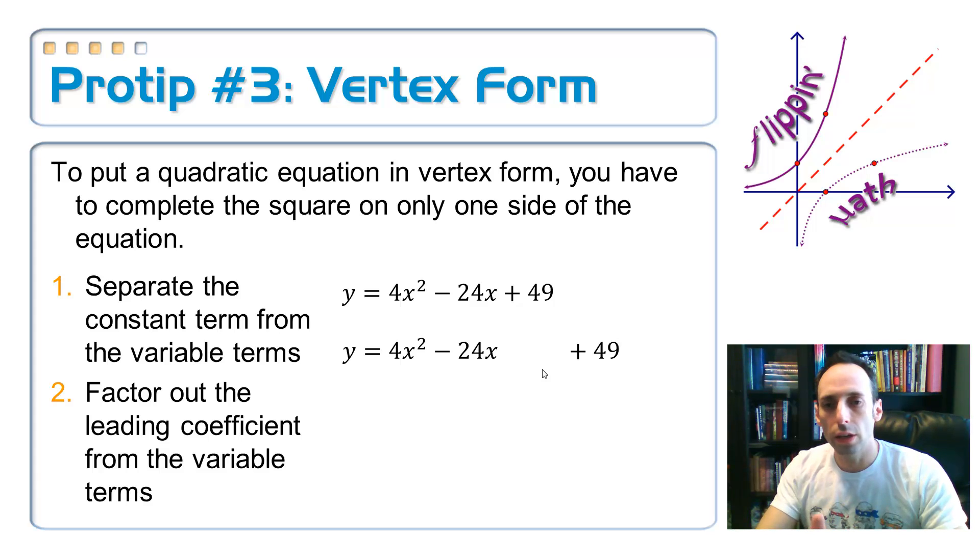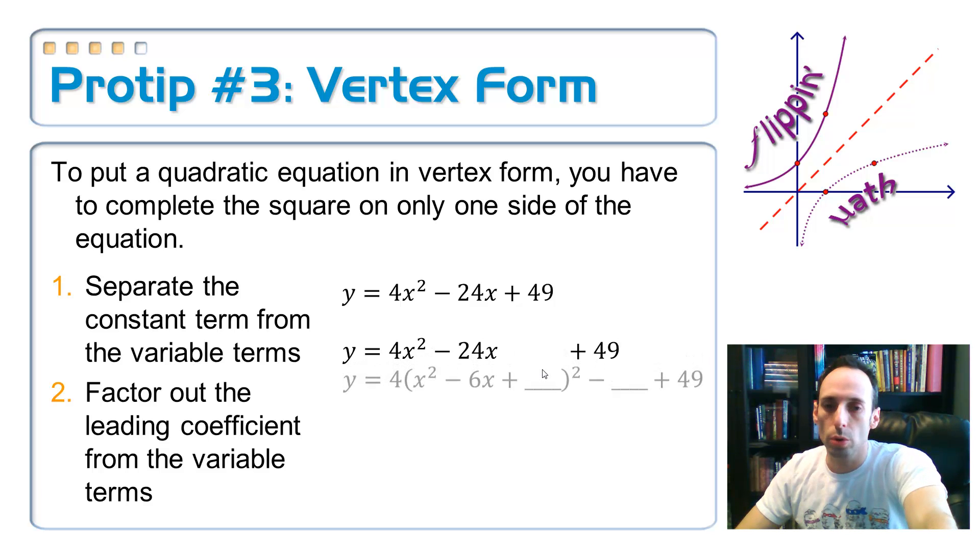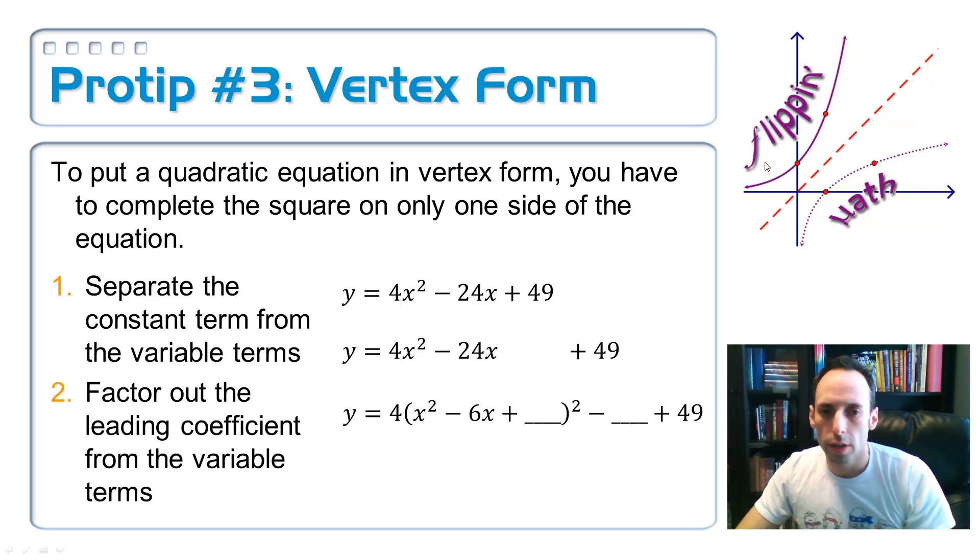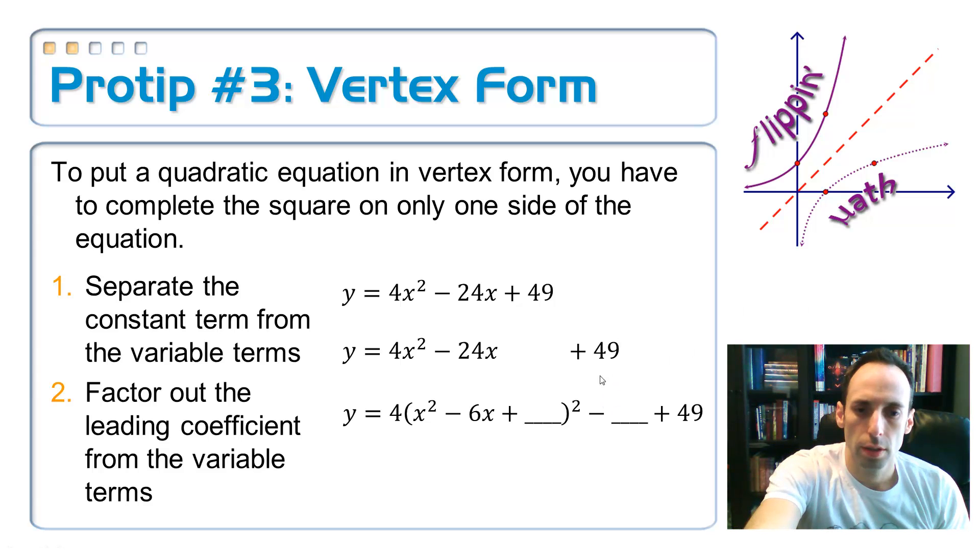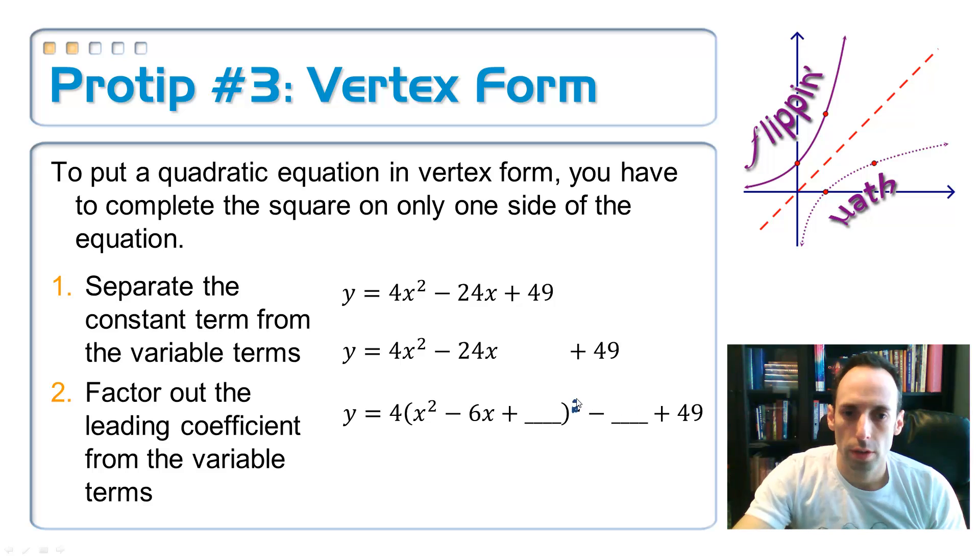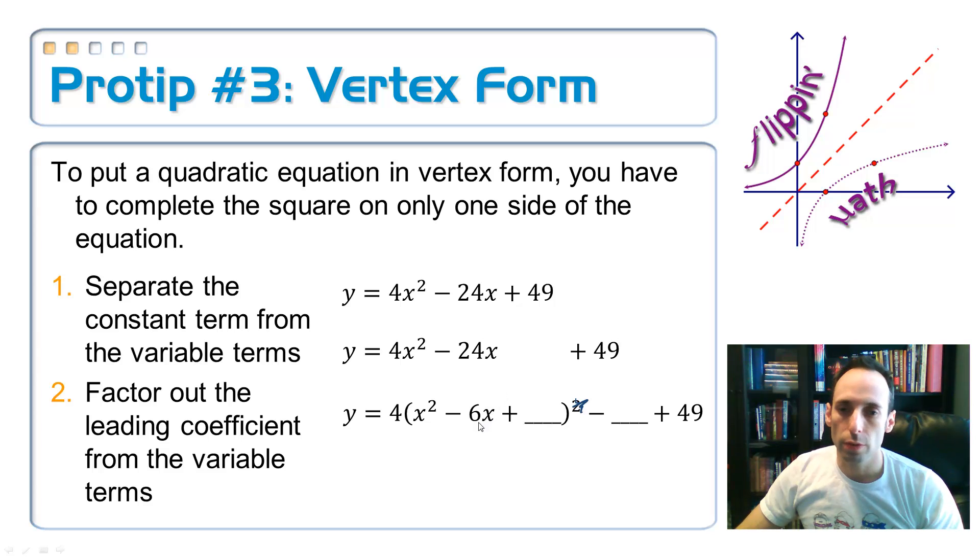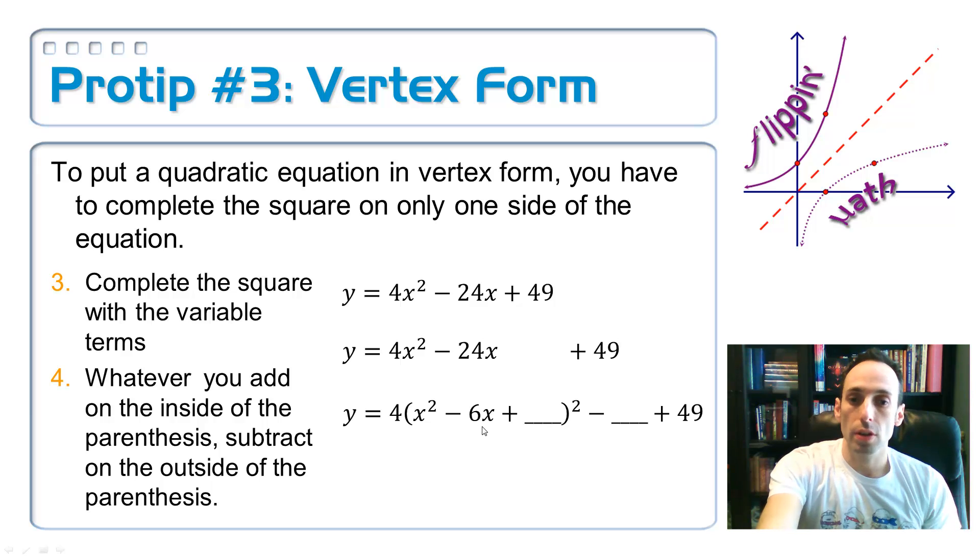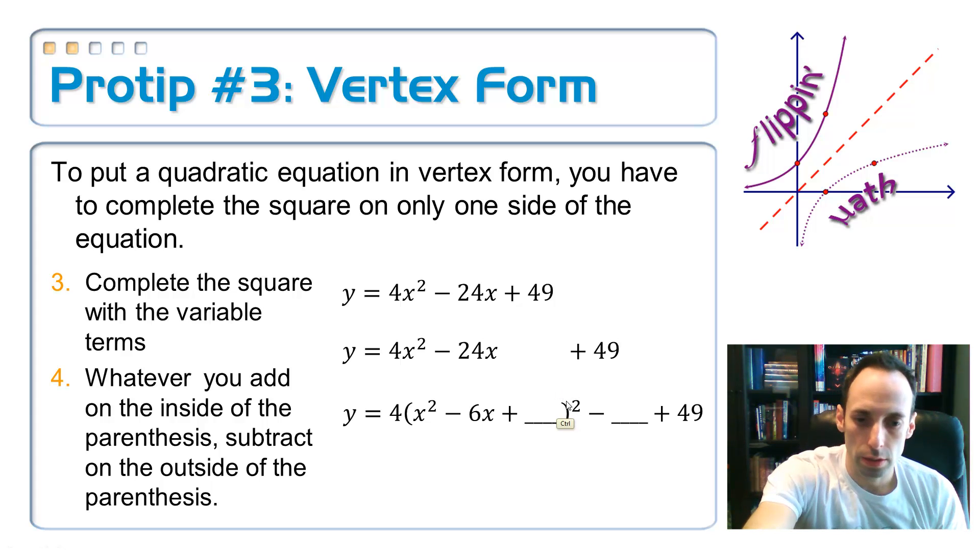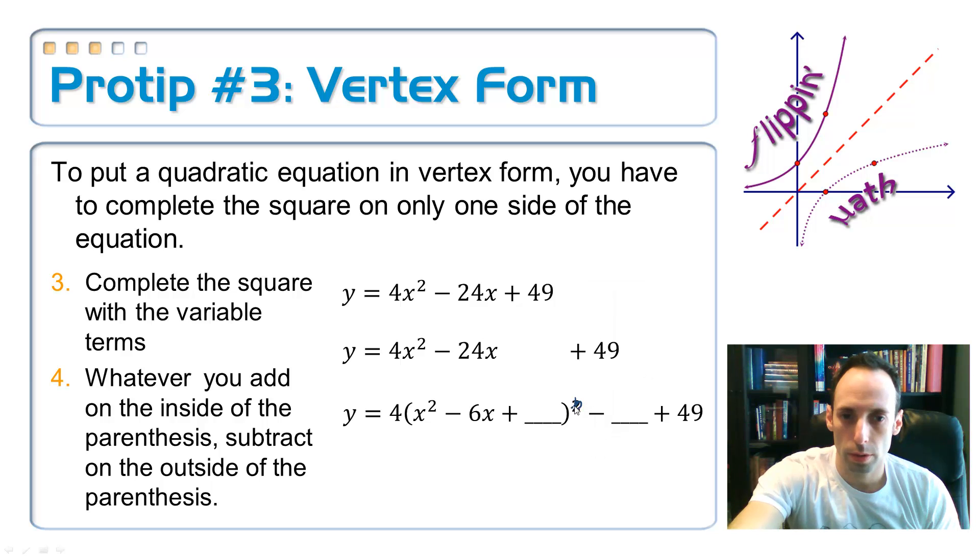Factor out whatever that leading coefficient is, whether it's a GCF or not. On this example, 4 goes evenly into that 24, so you could pull it out pretty easily. I don't know why that thing is squared on the outside there. Just ignore it for right now. See here, here, let me, I do this, just ignore that for right now. Yeah, anyway, if it was say 23, you still have to pull it out, and then you'd have a fraction on the inside, but sometimes that's unavoidable.